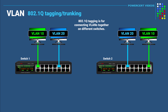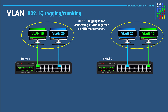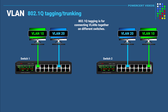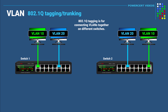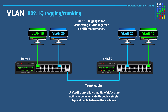Now if you wanted to connect VLANs together that are connected to different switches, this is where 802.1Q tagging comes in. For example, on Switch 1 we have two VLANs — VLAN 10 and VLAN 20 — and on Switch 2 we also have VLAN 10 and VLAN 20. To give the computers on VLAN 10 from each switch the ability to communicate with each other, and the same for VLAN 20, this is done by using 802.1Q VLAN trunks. A VLAN trunk allows multiple VLANs the ability to communicate through a single physical cable between the switches, connected to a trunk port on each switch.